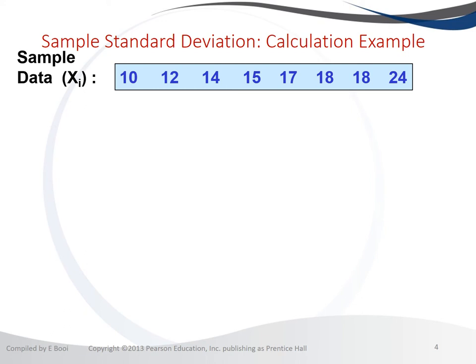The first step is to count how many observations there are and to calculate the mean. Counting: 1, 2, 3, 4, 5 — there are 8, so n equals 8. We then calculate the mean as the sum of all observations divided by 8: 10 plus 12 plus 14, up to 24, divided by 8, which gives a sample mean of 16.